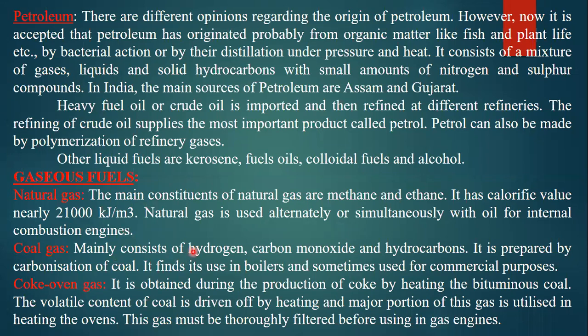Natural gas has main constituents of methane (CH4) and ethane (C2H6), with a calorific value of approximately 21,000 kJ/m³. It can be used as an alternative to, or simultaneously with, oil in IC engines. Coal gas consists mainly of hydrogen, carbon monoxide, and hydrocarbons; it is prepared by carbonization of coal. Coke oven gas is obtained during the production of coke by heating bituminous coal; the volatile content is driven off and the gas is used to heat the ovens.